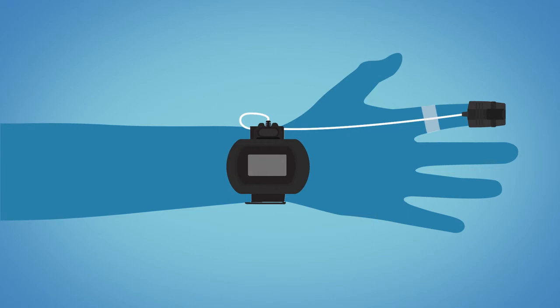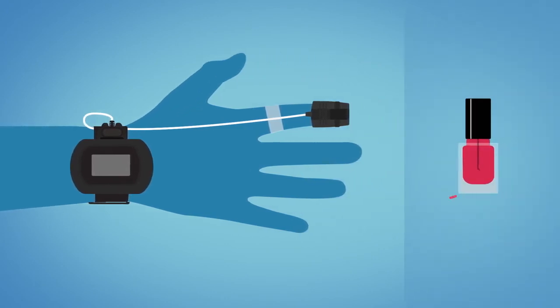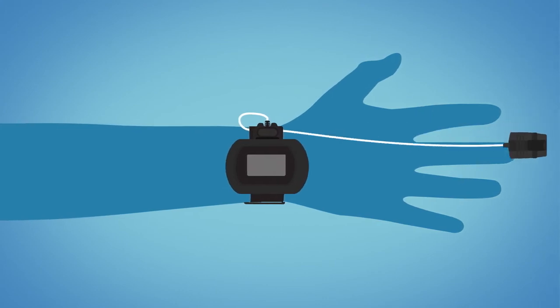To ensure an accurate reading on the pulse oximeter, remove any nail polish from your fingernail. The ring finger may be an alternative.